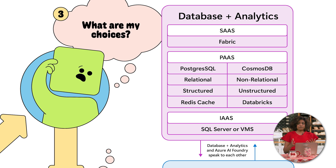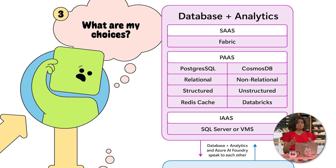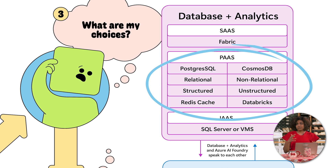For software as a service on Azure, you've got Fabric, where you can bring in all the datasets from different parts of your organization, analyze them, and use them. For platform as a service, think about whether your data is relational or non-relational. Relational: Postgres, SQL. Non-relational: Cosmos DB, especially in Azure. If you have cache needs, Redis cache, and also Databricks. You might be using all of these options depending on where your data is and what you're trying to do.